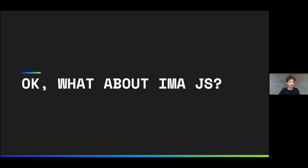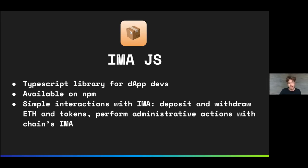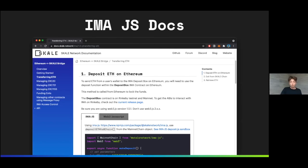What about IMA.js? IMA.js is a TypeScript library for DApp developers that's available on NPM. It's designed to simplify all interactions with IMA, such as deposit and withdraw ETH, ERC20, ERC721, and ERC1155 tokens, and perform all administrative actions by the S-chain owner. We already have some early docs that showcase IMA usage, available in our docs portal.